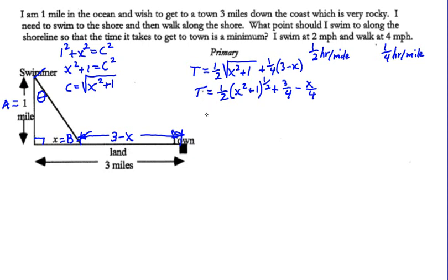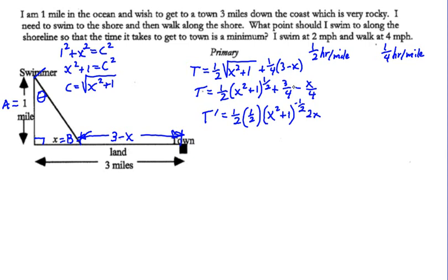Now we're going to take the derivative of time. The derivative of time, which we're going to call t prime, is equal to one half. Then to take the derivative of quantity x squared plus 1 to the one half power, we multiply by the exponent one half, bring x squared plus 1 to the negative one half power by the power rule of differentiation, times the derivative of the inside, which is 2x. The derivative of 3 fourths or any constant is zero, and the derivative of negative x over 4 is negative one fourth.